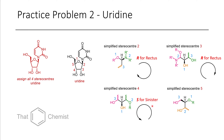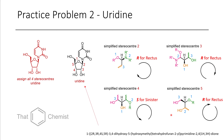Finally, for stereocenter 5, we have an ether. We also have an alcohol versus another alcohol. Because one carbon has an additional carbon substituent while the other only has two hydrogens, the bottom carbon gets priority — one, two, three. This is another rectus. So overall, we have 2R, 3R, 4S, 5R for the entire uridine.